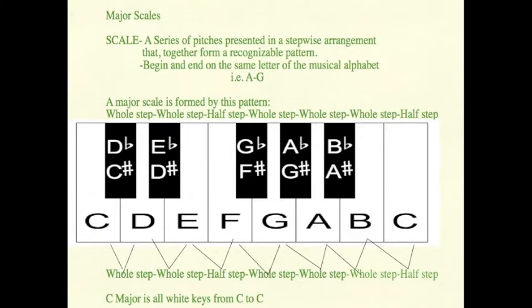I'll demonstrate that now in the key of C major. So we start on C, we have a whole step to D, a whole step to E, a half step to F, a whole step to G, a whole step to A, a whole step to B, and finally a half step to C.